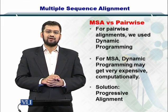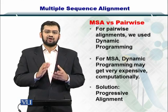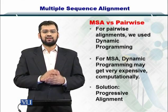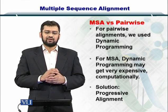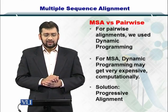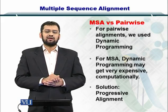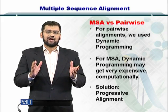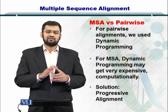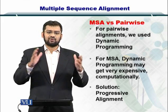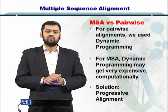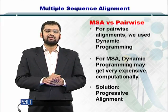That will increase the computational cost of dynamic programming to such a proportion that we will not be able to run the program. In the case of MSA, typically we do dynamic programming for no more than nine or ten sequences. If you have a lot more sequences, then we move to progressive alignment strategies.